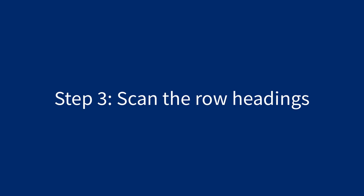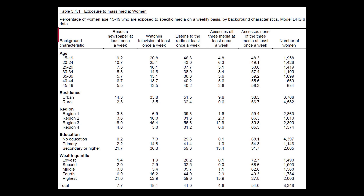Step 3 is to scan the row headings. These are found in the first vertical column in the table. They show the different ways the data are divided into categories based on background characteristics. In this case, the table presents women's exposure to mass media by age, urban or rural residence, region, educational level, and wealth quintile. Most of the tables in the DHS Program Final Reports will be divided into similar categories.